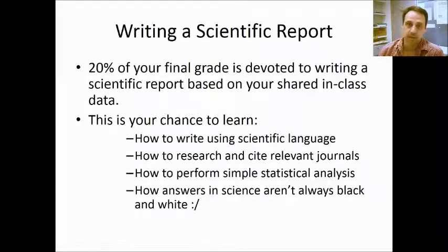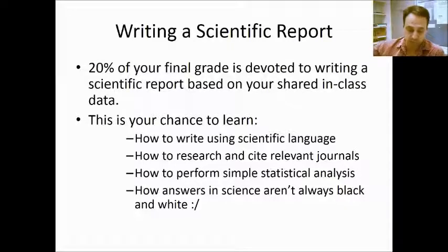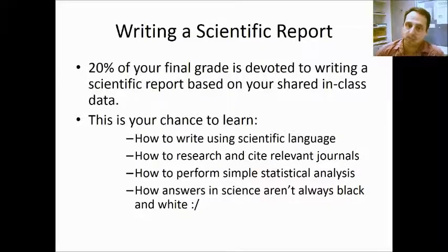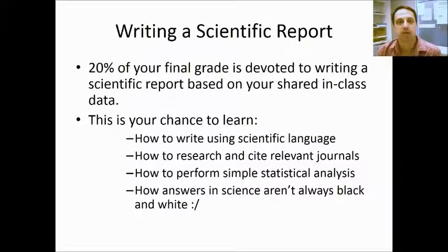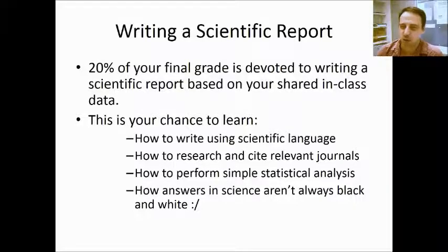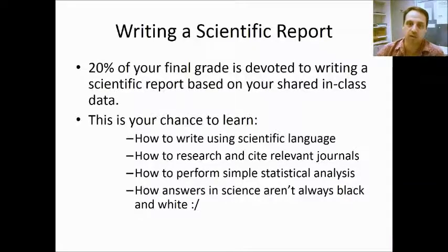At the end of the practicals, there are two pracs where you'll be asked to write up a scientific report. The whole class of around 500 students will collate their data, and you'll do some analysis and write it up. This is important because if you want to become a scientist, you'll need to write scientific papers. We encourage the correct use of scientific English, research in relevant scientific journals with proper citations, and statistics on the data. Sometimes science isn't always black and white — the answers are often not what you'd expect. The scientific report is worth about 20% of your final grade.